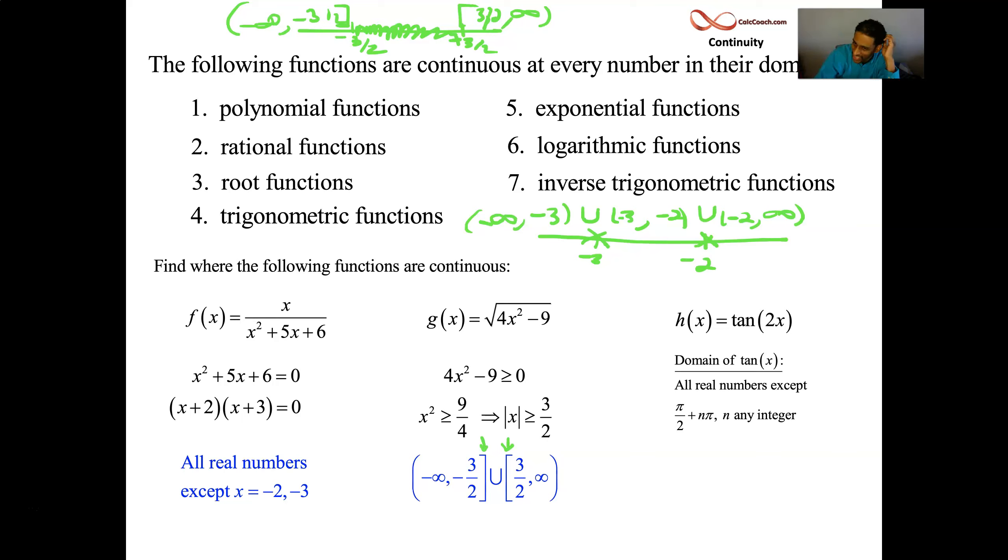What about tan of 2x? Same thing, but it's pi over 4. And then your period is pi over 2. Any multiple of pi over 2, any integer multiple of pi over 2 has to be thrown out. There's no real nice way to write that as interval notation. If you asked for a certain number of intervals, we could do it. But there's infinitely many of these intervals. So a good way to describe it is all real numbers except pi over 4 and negative pi over 4 and any integer multiple of pi over 2.